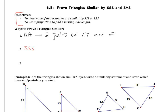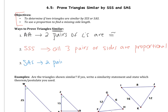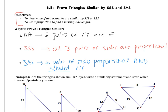The next way is SSS. SSS you've seen before as a way to prove triangles congruent, but it also proves triangles similar. For similarity, SSS means all three pairs of sides are proportional. And then the next theorem is SAS, which tells us we have two pairs of sides proportional and the included angles are congruent. All three of these theorems will prove that triangles are similar.